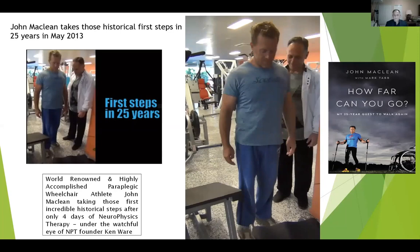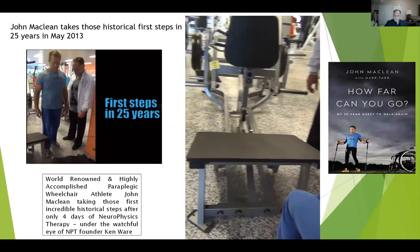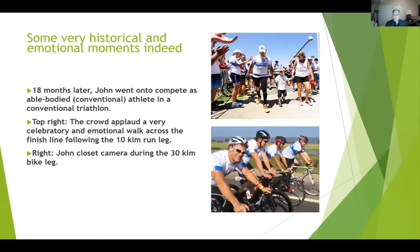That's quite amazing. John has his book out — How Far Can You Go — you can see it on the slide there. As we speak, they're in the throes of making a Hollywood movie based on this story, and the script has just been finalised — I was told yesterday. Eighteen months later, John went on to complete an able-bodied triathlon. It's quite an emotional moment as he crosses the finish line holding his son Jack's hand and his wife Amanda's.